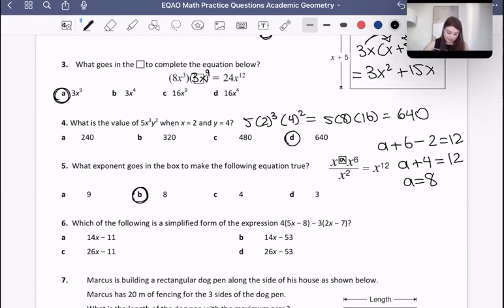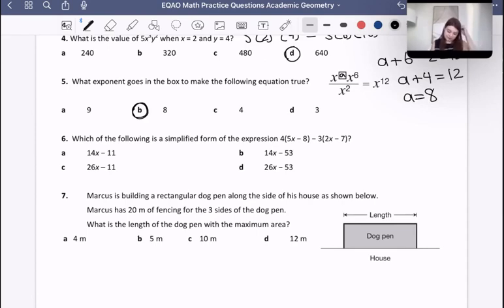Okay. All right, let's do number 6. Which of the following is a simplified form of this expression? Well, let's find out what the simplified version is and see if it matches up with any of these. So here we have 4 times 5x, which is 20x, and then 4 times negative 8, which is negative 32. And then here we have negative 3 times 2, which is negative 6x. And then we have negative 3 times negative 7, which is plus 21. So then we have, let's see, 20x minus 6x is 14x. And then we have minus 32 plus 21, which is negative 11. So therefore, A is going to be our answer there. Very good.